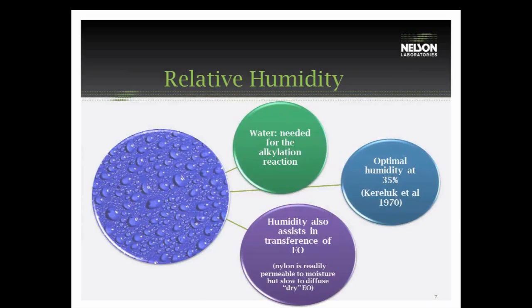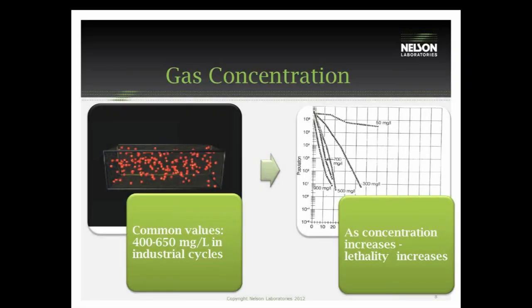Relative humidity is needed for sterilization for the alkylation process. The optimal humidity level is about 30 to 35 percent. Anything in excess of that is going to increase the rate of sterilization and increase that alkylation reaction. Gas concentration is another variable. Common values for gas concentration are 400 to 600 milligrams per liter. As you increase the concentration of ethylene oxide, you will also increase the lethality rate of the process.